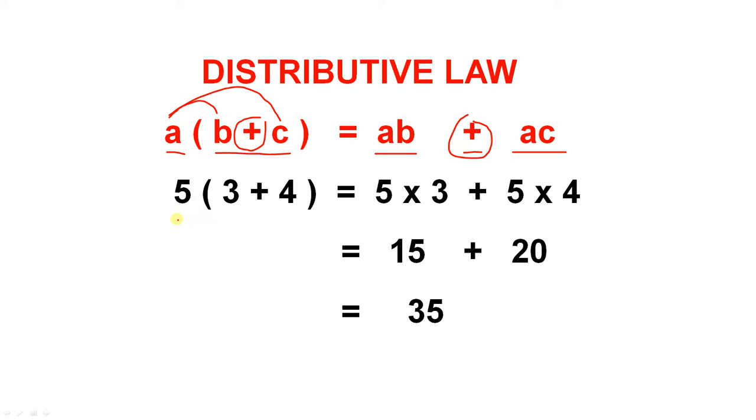So if you're multiplying 5 outside of 3 plus 4, 5 times 3, which is this part, 5 times 4, which is this part, there's the addition sign, 5 times 3 is 15, 5 times 4 is 20, 15 plus 20 gives you 35.